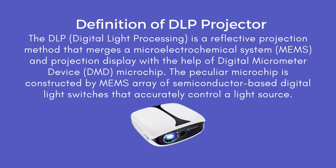Definition of DLP projector: DLP (Digital Light Processing) is a reflective projection method that merges a micro-electro-chemical system (MEMS) and projection display with the help of a digital micromirror device (DMD) microchip. The microchip is constructed by a MEMS array of semiconductor-based digital light switches that accurately control a light source.